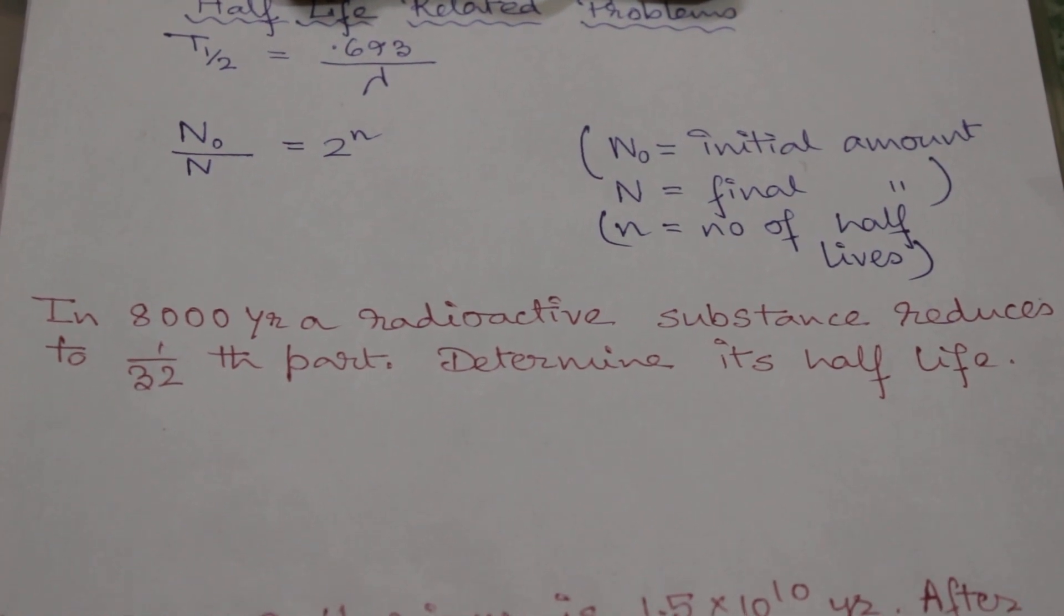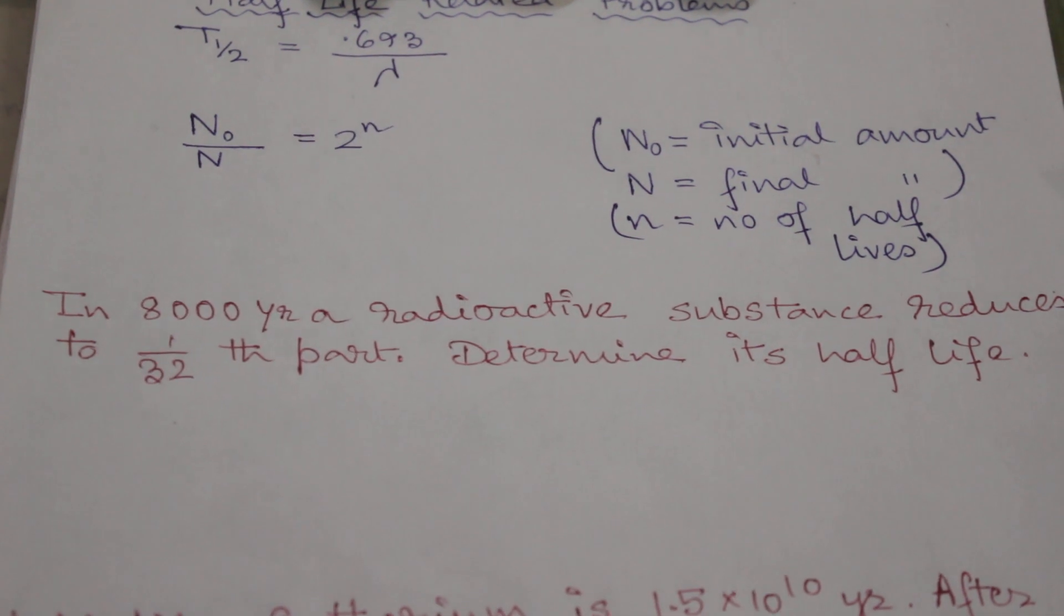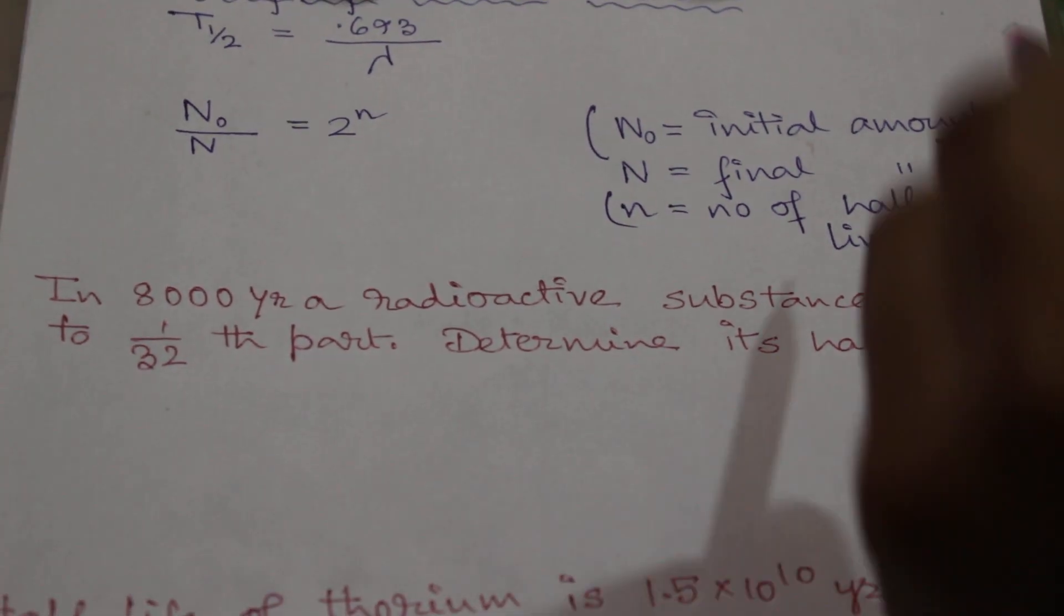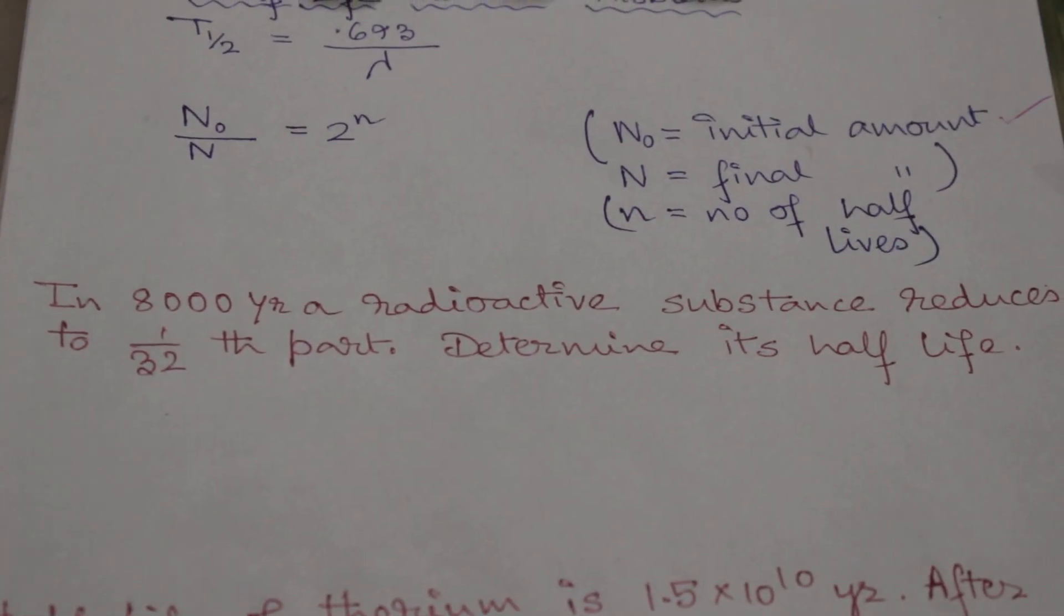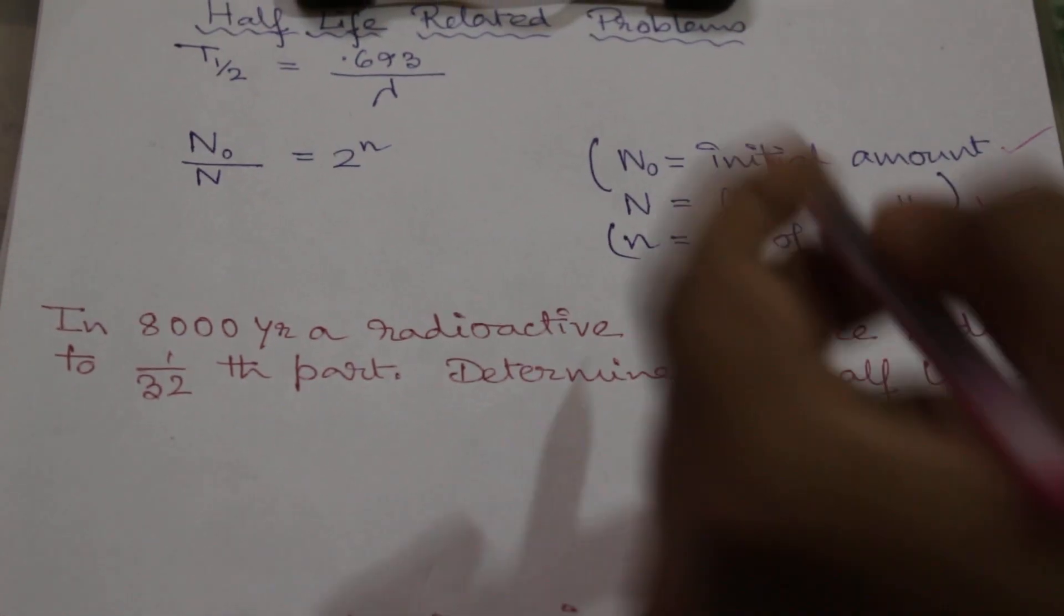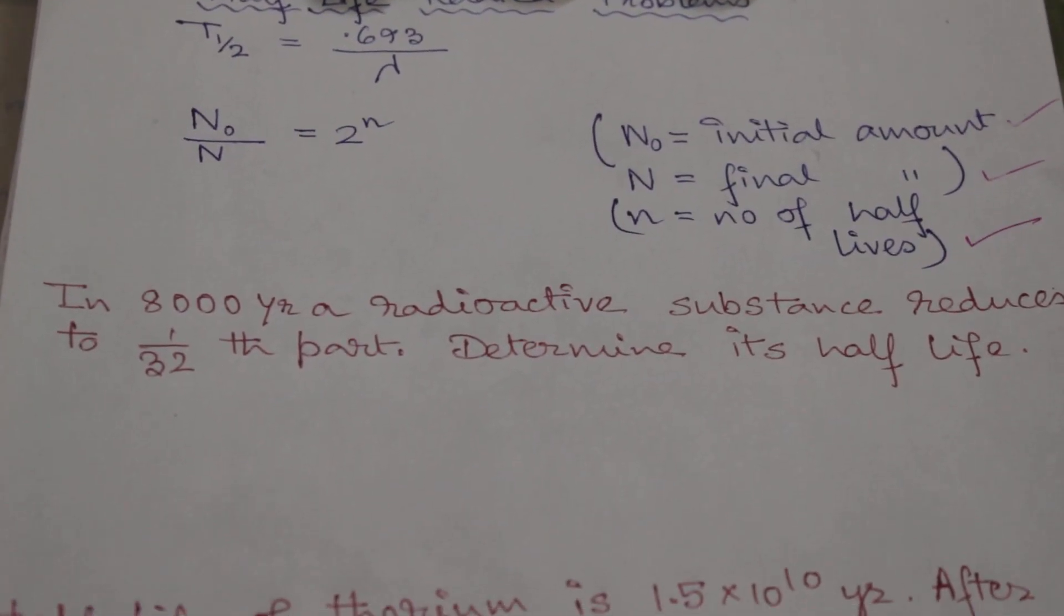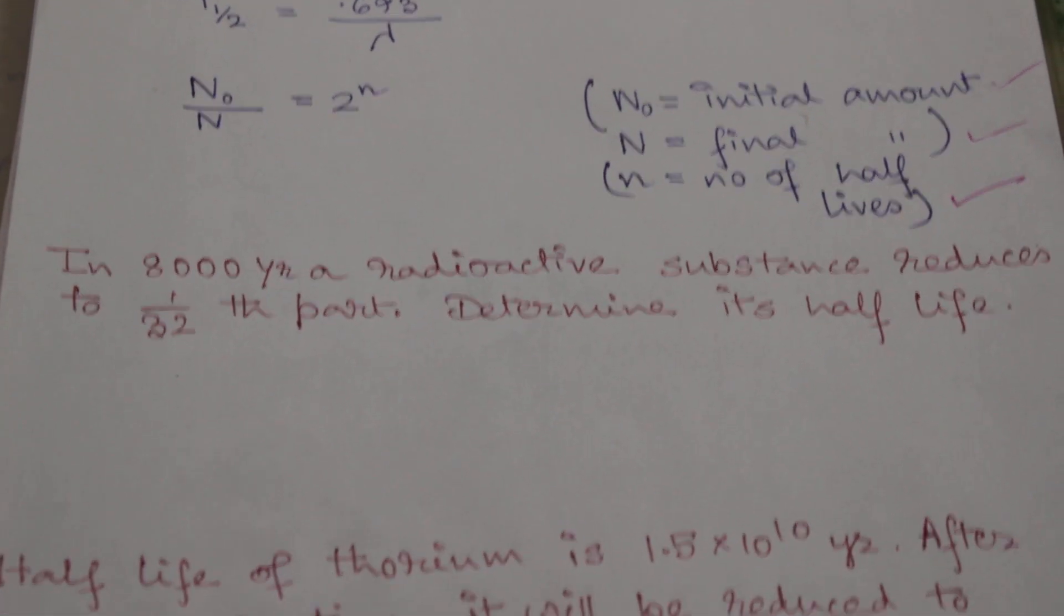There is one more formula: N₀ by N equal to 2 to the power small n, where N₀ is the initial amount, N is the final amount, and small n is the number of half-lives. Now let us do some examples.